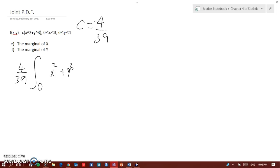Because you are integrating with respect to y, you're going to use the integral of y, so 0 to 1, dy. That would equal to 4 over 39 times x squared y plus y to the 4 over 4, from 0 to 1. That would be equal to 4 over 39 times x squared plus 1 over 4.